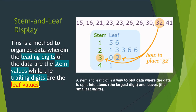Next is the stem and leaf display. This is a method to organize data wherein the leading digits or the largest digits of the data are the stem values, while the trailing digits or the smallest digits are the leaf values. For example, we have the data set: 15, 16, 21, 23, 23, 26, 26, 30, 32, 41.